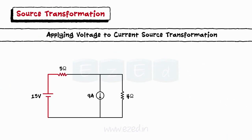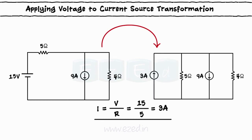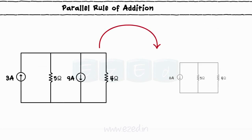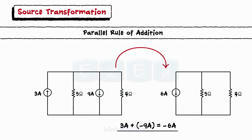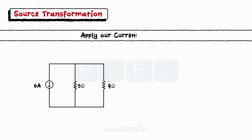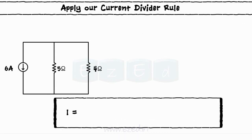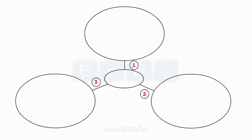Now we have two voltage sources of 25 volts and 10 volts connected in series. Applying the series rule of addition, we replace them by an equivalent source of 15 volts in series with 5-ohm resistance. Applying source transformation again to the 15-volt source, we replace it by a current source of 3 amperes connected in parallel with a 5-ohm resistance. Now we have two current sources in parallel, so replacing them by an equivalent current source of 6 amperes, we apply the current divider rule: I = 5/(5+4) × 6 = 3.33 amperes, flowing from bottom to top.